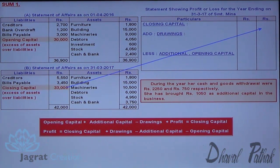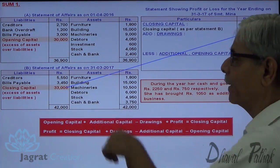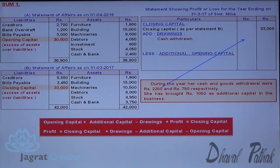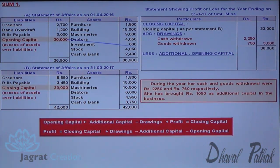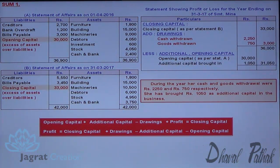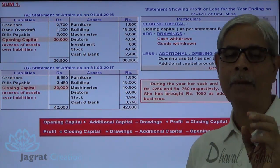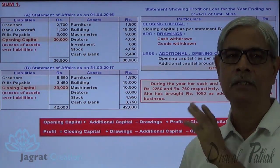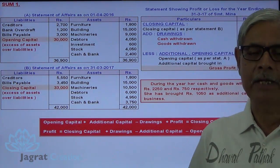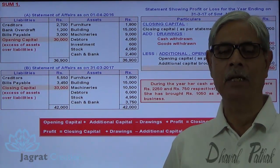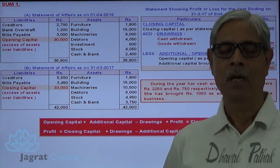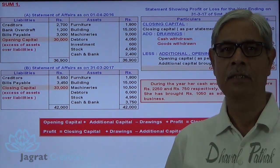This is the closing capital found by preparing the closing statement of affairs. To that I add cash drawn and goods drawn, giving 36,000, minus opening capital and additional capital. So I get the profit earned by the proprietor during the year. This is how — a simple sum — I have tried to find out the profit by the capital comparison method. I feel that you have followed all these things. Thanks.